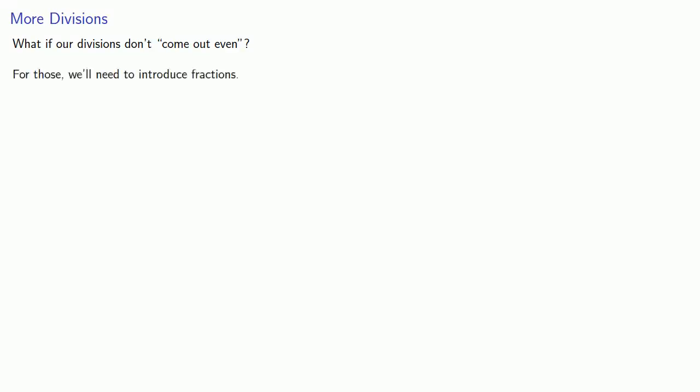What if our divisions don't come out even? For those divisions, we'll need to introduce fractions. The ancient Egyptians used unit fractions, which correspond to the aliquot parts of the divisor. In case these terms aren't familiar to you, here's a quick review.